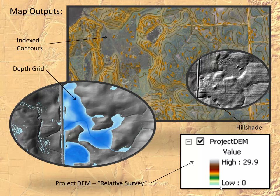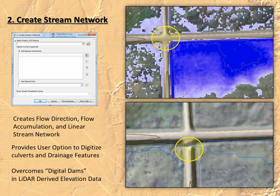Every increment within there is rounded to the nearest tenth of a foot. The second step is creating a stream network. This allows you to incorporate any culverts needed in your DEM to break digital dams and properly route flow across the landscape. If no culverts are needed, you don't need to supply any. This sets up the flow accumulation and flow direction layers in the background for watershed delineation in the next step.